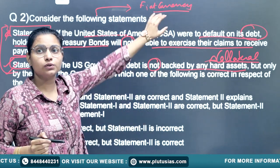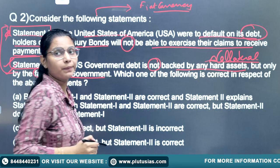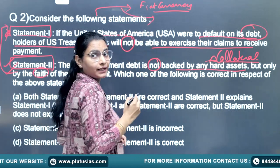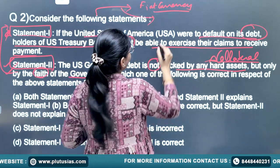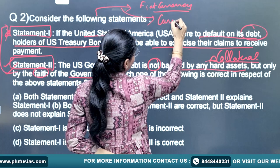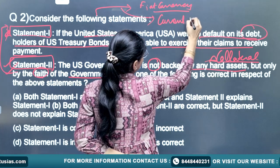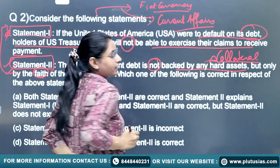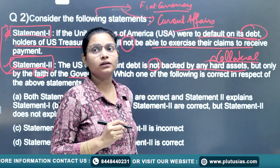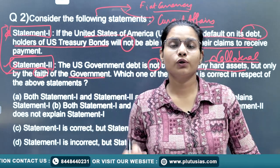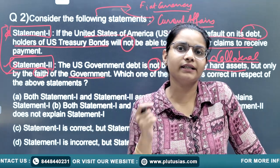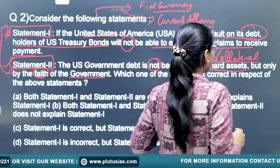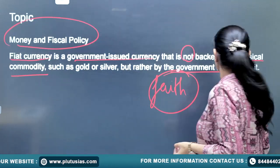This question is linked to two topics: fiat currency and current affairs. The US debt default was in the news, which is why CBLO — which has collateral unlike Treasury Bills — became relevant. Statement two is true and is essentially an explanation of statement one. You need to understand how to interlink current affairs with conceptual knowledge.